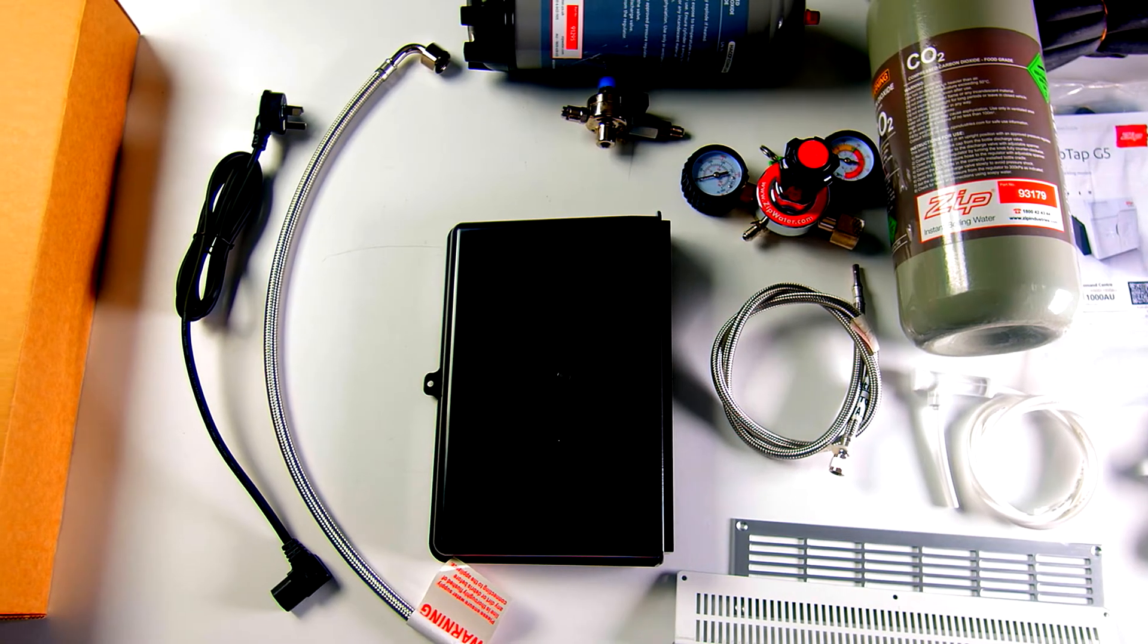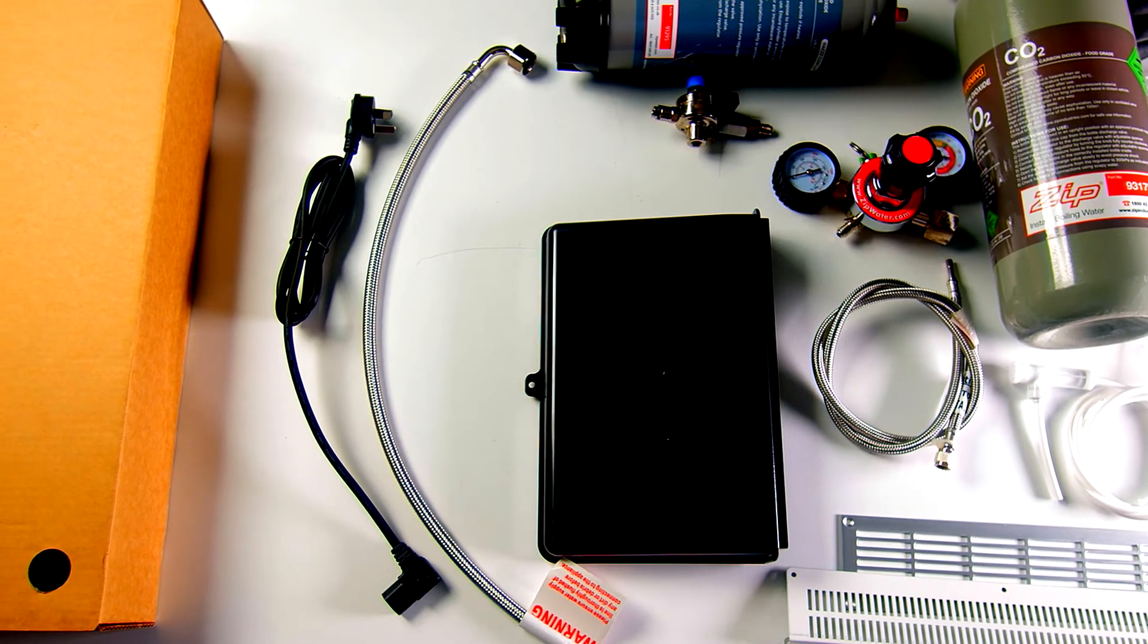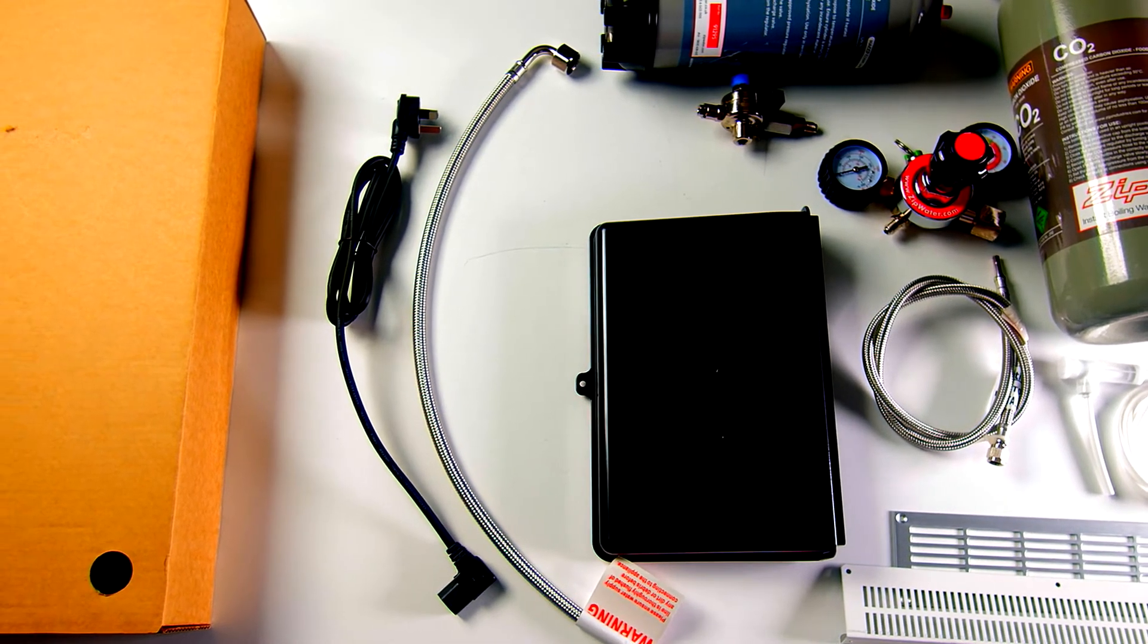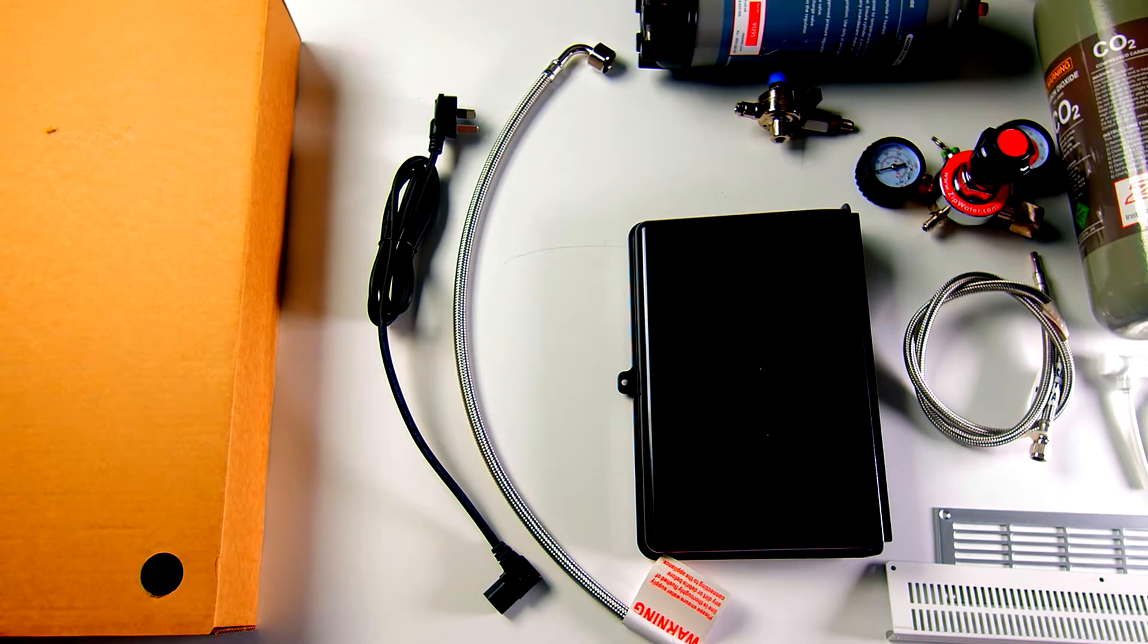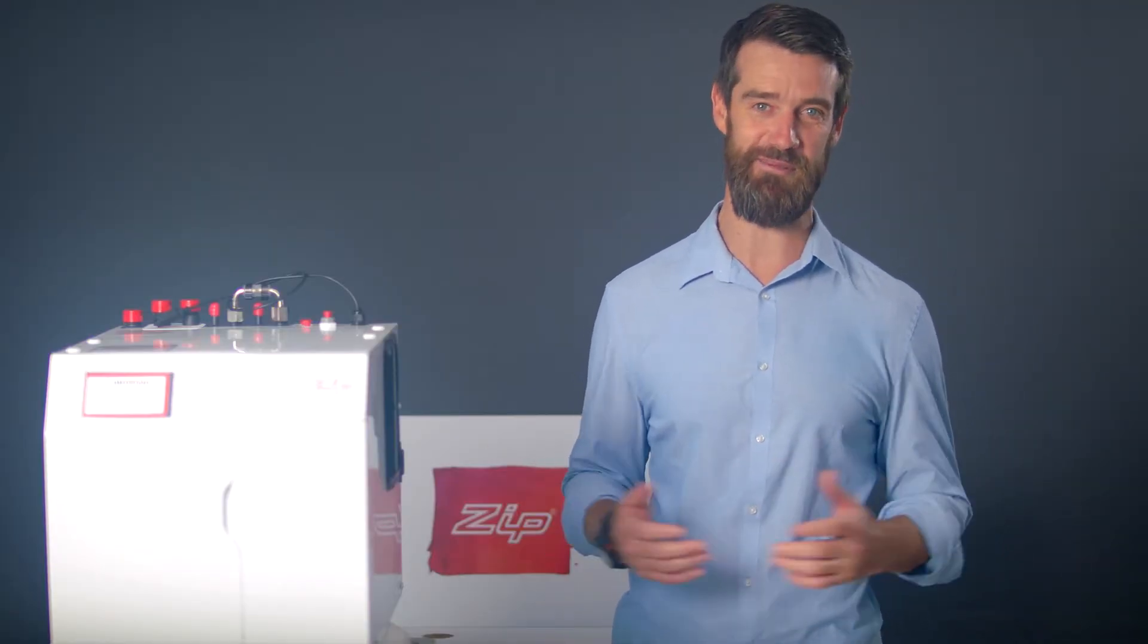A command center, braided water hose, braided CO2 hose, preset regulator, CO2 bottles, IEC power lead, and quick guide instructions which include a QR code link to the installation video you're now watching.